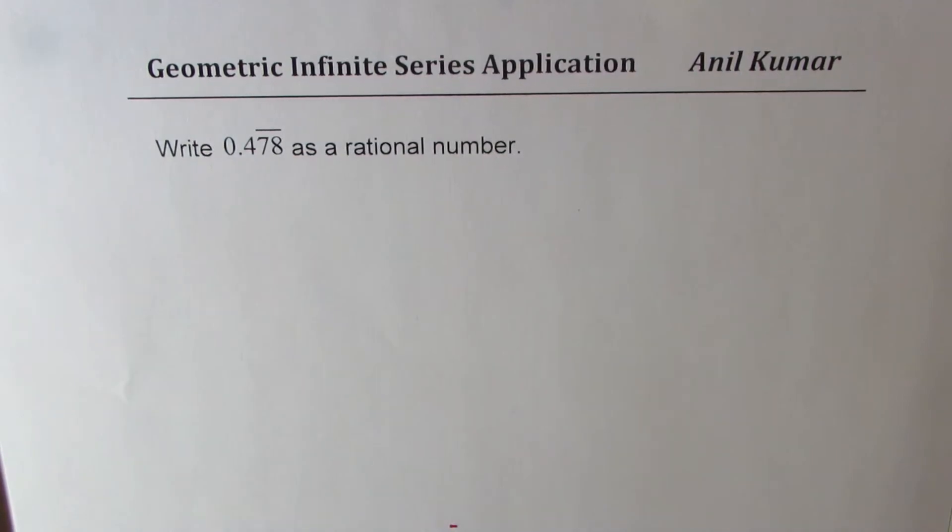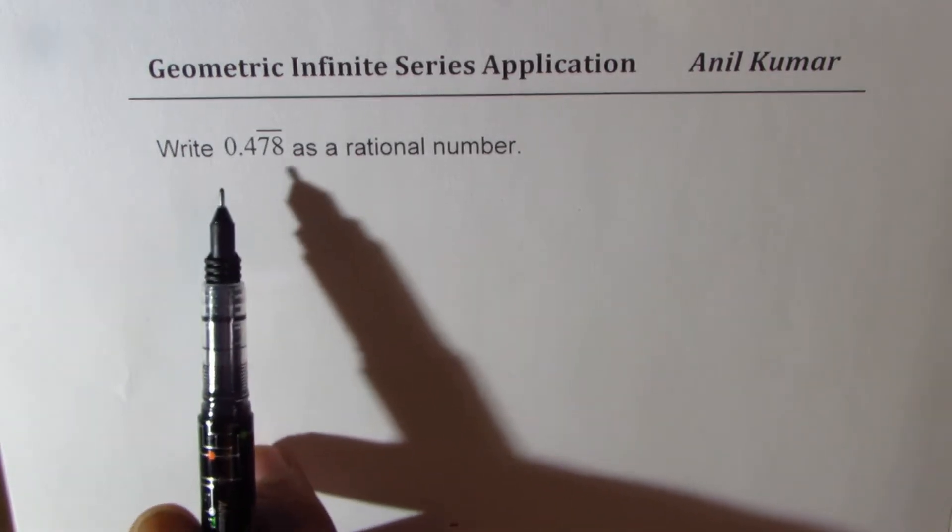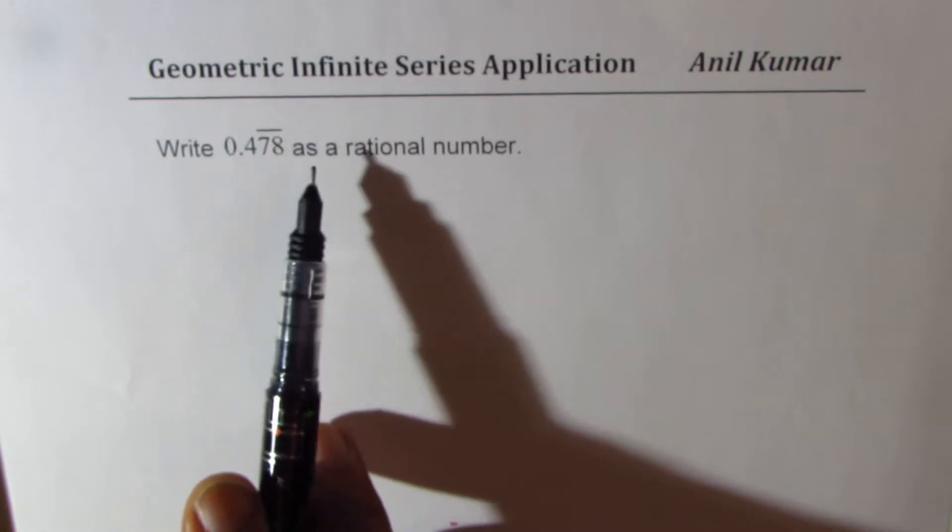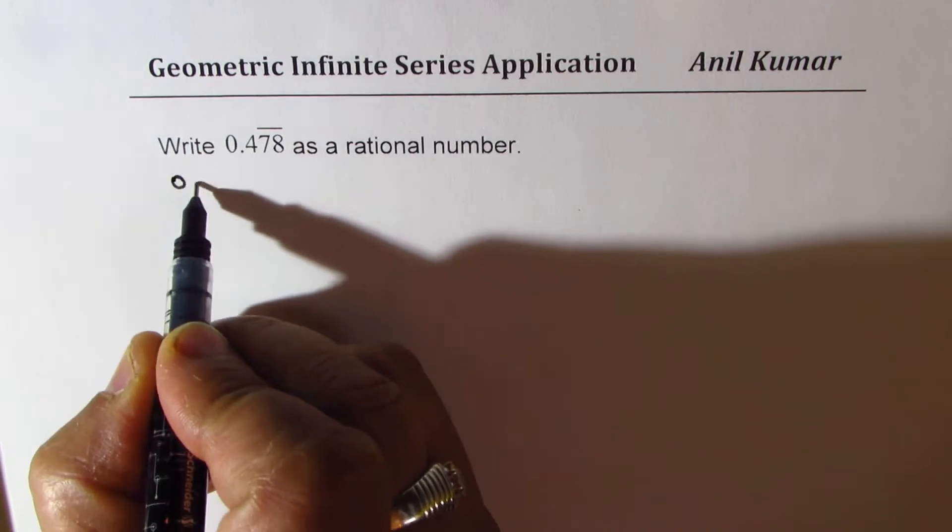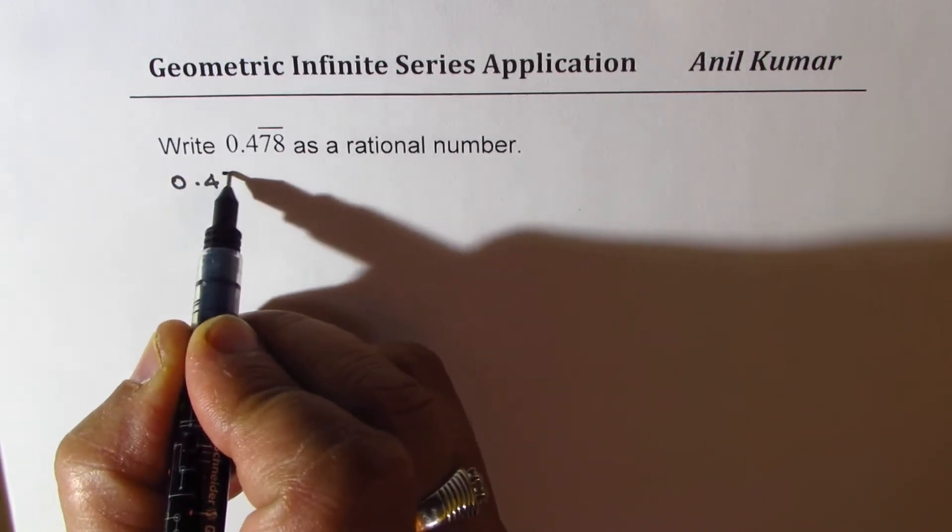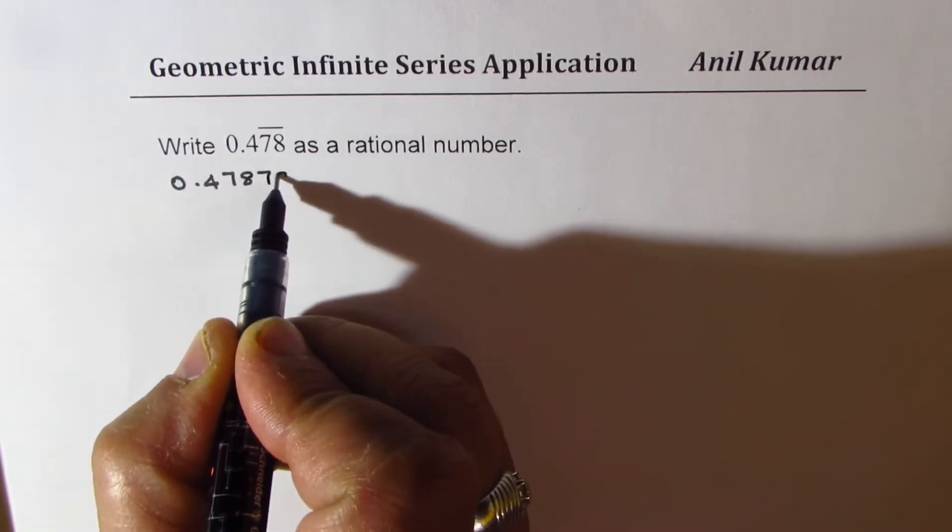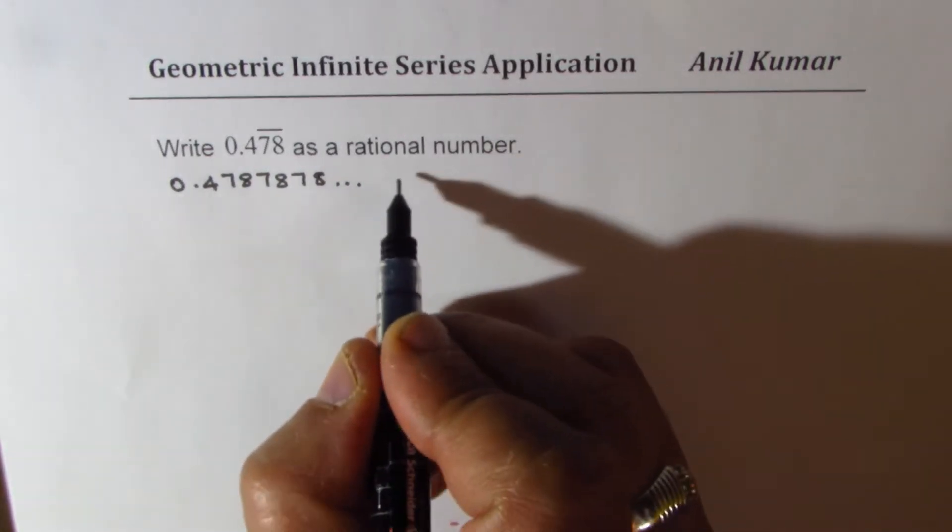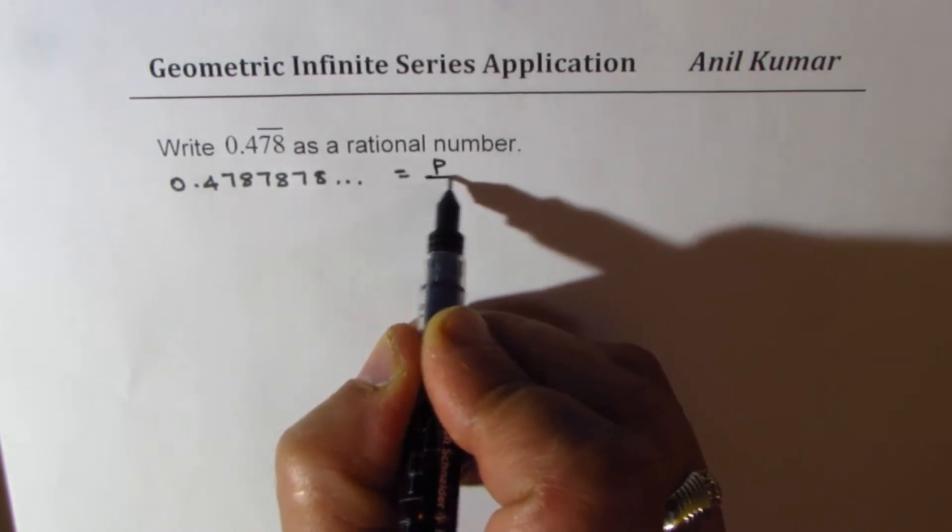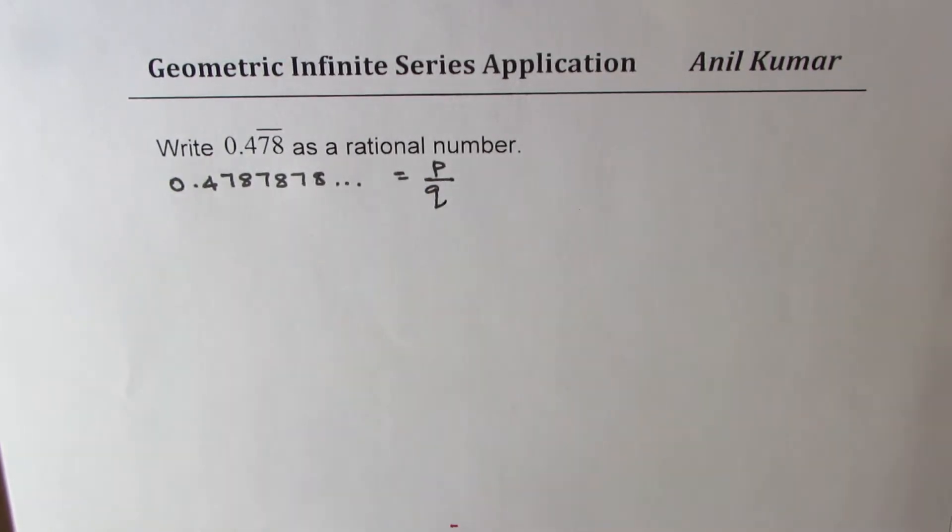I'm Anil Kumar sharing with you a test question based on geometric infinite series. We'll write 0.478 recurring as a rational number. So the number is 0.4 with 78 repeating, like 78 78 78. We want to write it in the form P over Q, a fraction. In this video we will learn two methods to solve this.